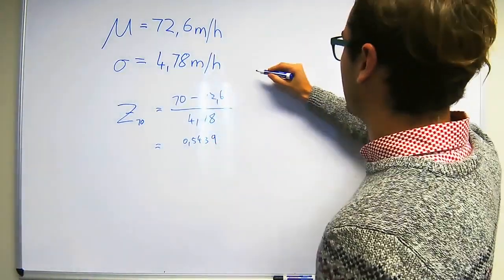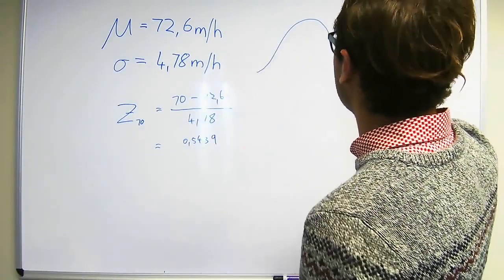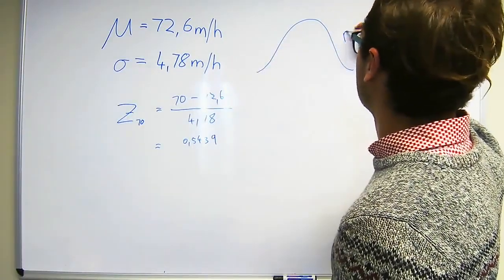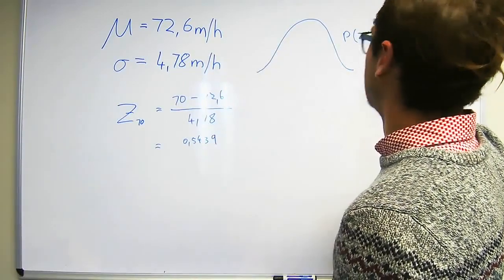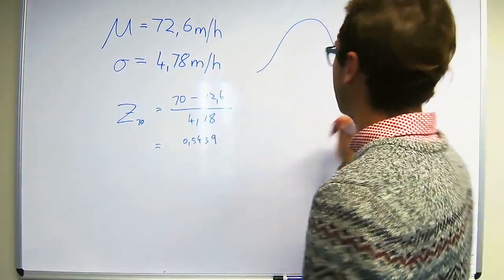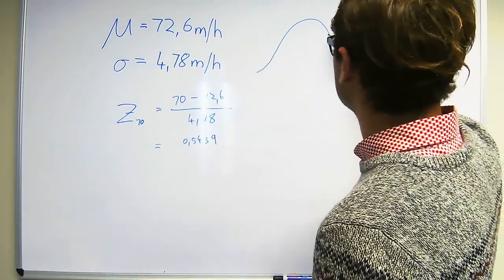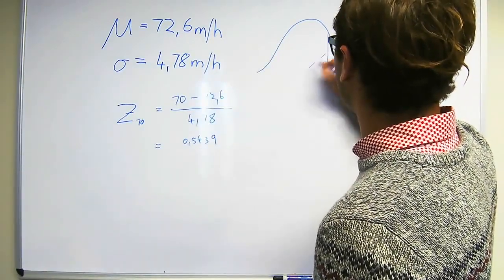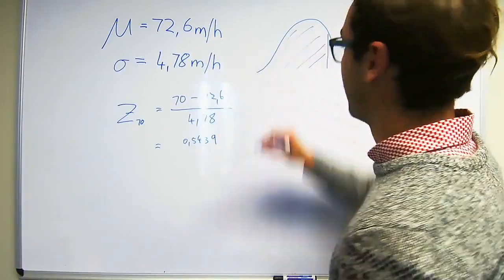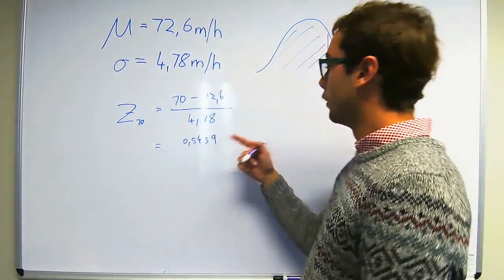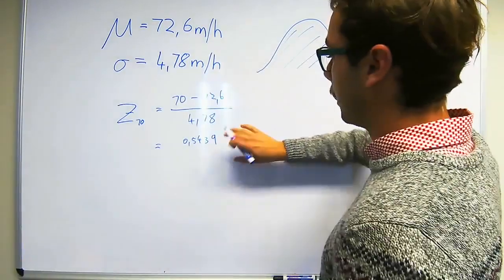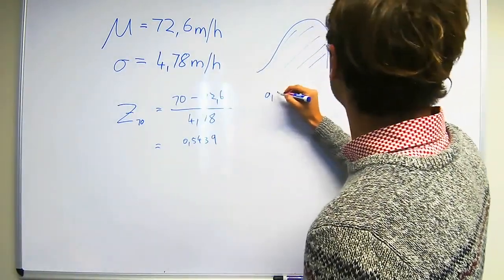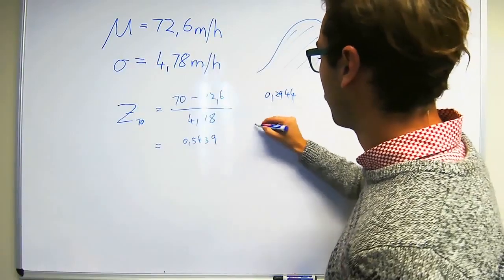Once again, if we draw a normal distribution, what the Z-table gives us is the probability that Z is less than or equal to Z. That minus 0.5439 corresponds with the probability of it being less. So in order to find that value, we now have to say that probability is 0.2944.